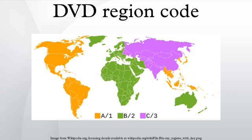DVDs may use one code, a combination of codes, every code, or no codes. DVDs sold in the Baltic states use both region 2 and 5 codes. Region 0 is widely used by China and the Philippines. DVDs in Paramount Latin America use both the region 1 and region 4 codes. Most DVDs in India combine the region 2, region 4, and region 5 codes.